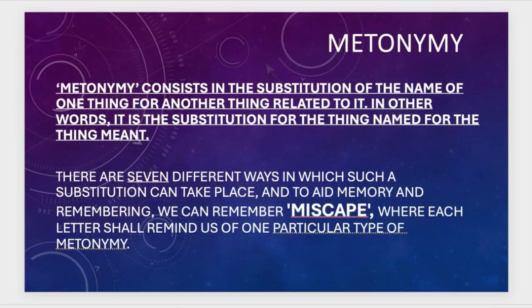We will begin with metonymy. Metonymy consists of some form of substitution — the name of one thing substituted for another related thing, or the thing named for the thing meant. There are several different ways in which such substitution occurs in literature. To aid memory, I ask my students to remember the word MISCAPE, M-I-S-C-A-P-E, where each letter reminds us of one particular type of metonymy.